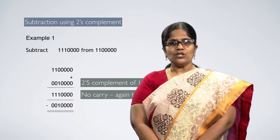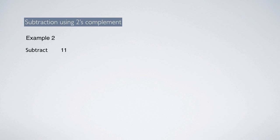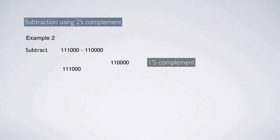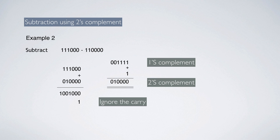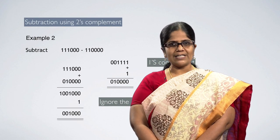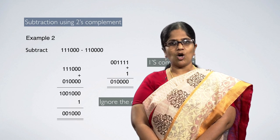Let us see another example to see how it works when a carry is obtained: 1110000 minus 110000. The first number 1110000 is left as it is. Find the 2's complement of 110000 by first taking 1's complement and adding 1 — the 2's complement is 0010000. Perform binary addition for 1110000 and 0010000. The answer is 10010000. We get a carry. When getting a carry in 2's complement subtraction, just ignore that carry and the answer is 0010000. Observe that subtraction using either 2's complement or 1's complement gives the same answer; only the methodologies are different.